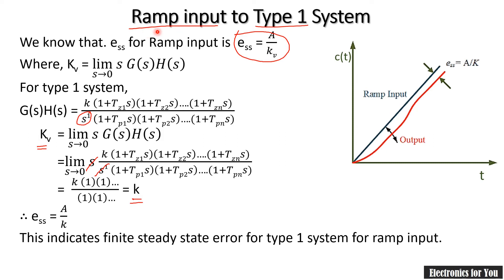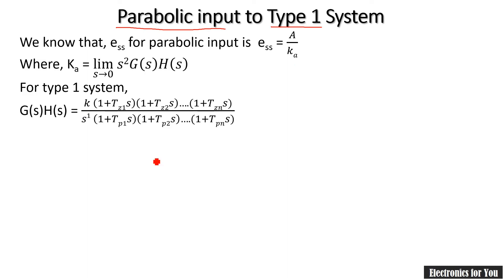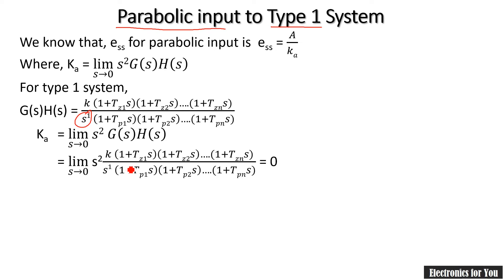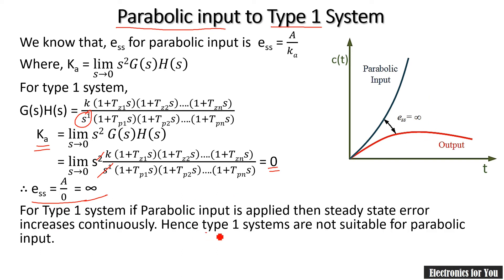Parabolic input to type 1 system: ESS = A/Ka. For type 1 system with s raised to power 1, substituting into the Ka formula gives s² times the transfer function. With limit s→0, s=0 makes the term zero, so Ka = 0 and ESS = A/0 = infinity. Therefore type 1 systems are also not suitable for parabolic input.